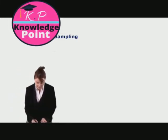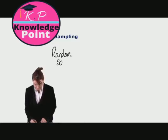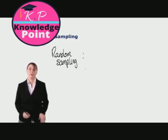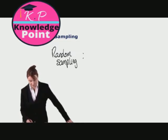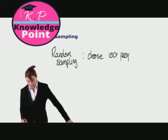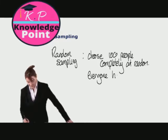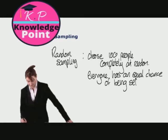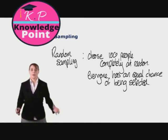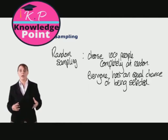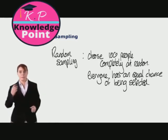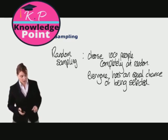There are a few different approaches we can apply to sampling. First of all, we have random sampling. If we want a sample of 100 people, then we choose 100 people completely at random. Everyone has an equal chance of being selected. We don't take into consideration different age groups or anything else — we are just selecting 100 people from the population at random, and there is as much chance of one person being chosen as the next.